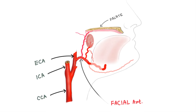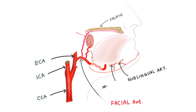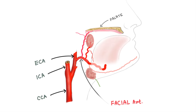The submental artery runs on the underside of the chin, forward upon the mylohyoid muscle just below the body of the mandible and beneath the digastric muscle. It supplies the surrounding muscles and anastomoses with the sublingual artery and the mylohyoid branch of the inferior alveolar artery. It also supplies a territory of skin in the submental area.